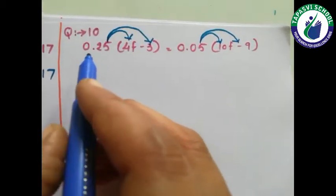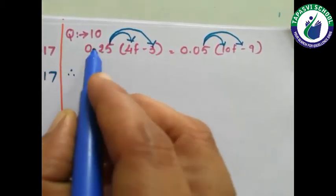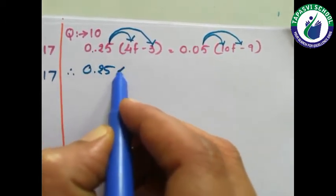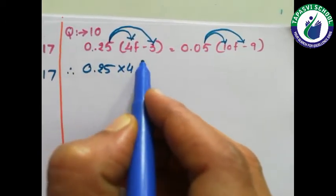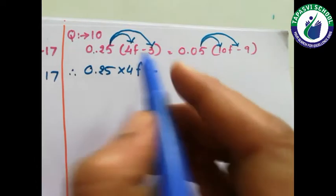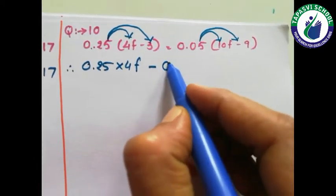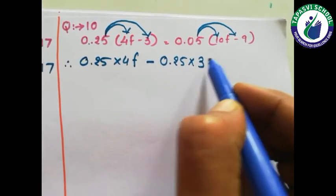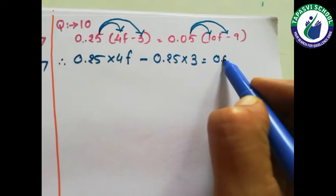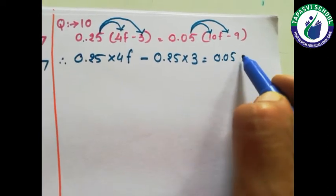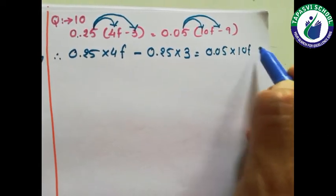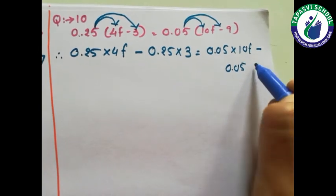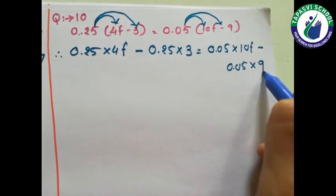Here: 0.25 multiplied by 4f, minus 0.25 into 3. Here: 0.05 into 10f, and minus 0.05 into 9.